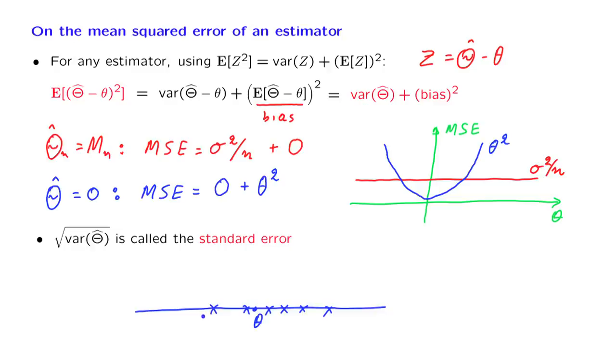And because of the randomness in the data, these estimates may be all over the place. Well, the standard error tells us how spread out all these estimates will be. It is the standard deviation of this collection of estimates.